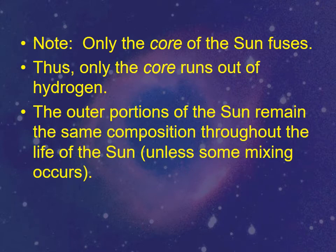Note, only the core has nuclear fusion. The outer part does not participate in nuclear fusion. That only happens at the core. So the core is what's running out of hydrogen. The outer parts stay mostly hydrogen throughout the life of the Sun, even when it's dead. The outer parts never took part in the nuclear fusion, so you still have hydrogen in the outer parts of the Sun.